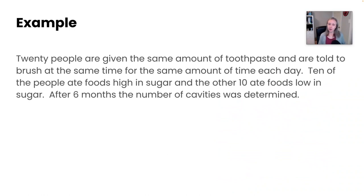So let's apply this to another example. We've got 20 people that are given the same quantity of toothpaste and are told to brush at the same time for the same length of time each day. 10 of the people ate foods high in sugar and the other 10 ate foods low in sugar. After six months, the number of cavities was determined. So in this experiment, what would be the independent variable, the dependent variable, and the potential control variables?